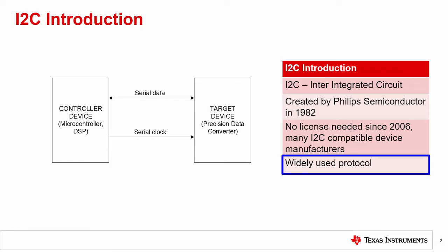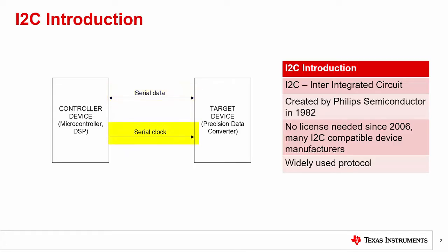I2C is a widely used protocol for many reasons. It requires only two lines for communications. Like other serial communication protocols, there is a serial data line and a serial clock line. I2C can connect to multiple devices on the bus with only the two lines. The controller device can communicate with any target device through an I2C address sent through the serial data line. I2C is simple and economical for device manufacturers to implement.